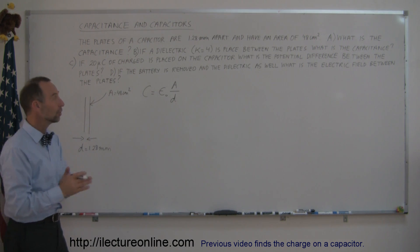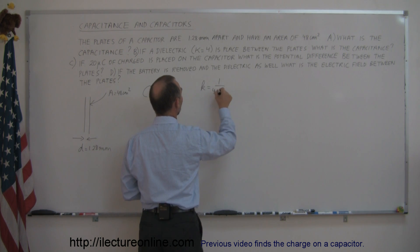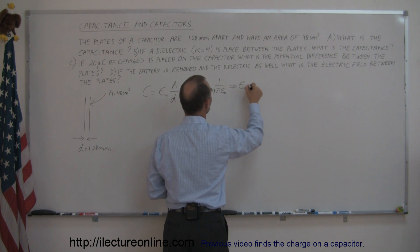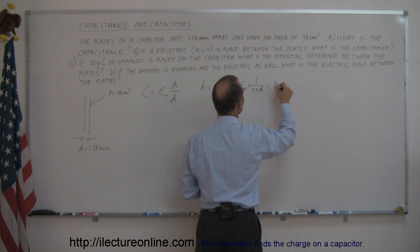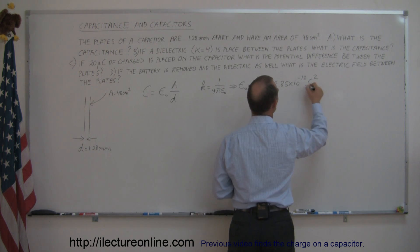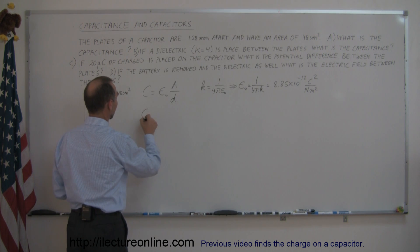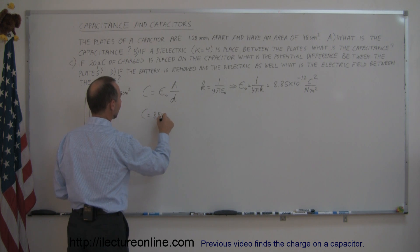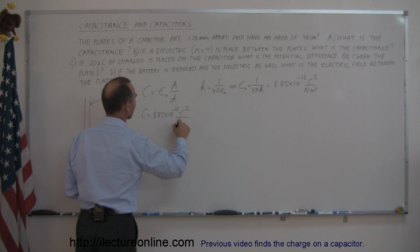Epsilon-sub-naught is related to K as follows: K equals 1 over 4π epsilon-sub-naught, which means epsilon-sub-naught equals 1 over 4π K. That value is 8.85 times 10 to the minus 12 coulombs squared per Newton meter squared. Knowing that, let's plug in the numbers. The capacitance equals 8.85 times 10 to the minus 12.